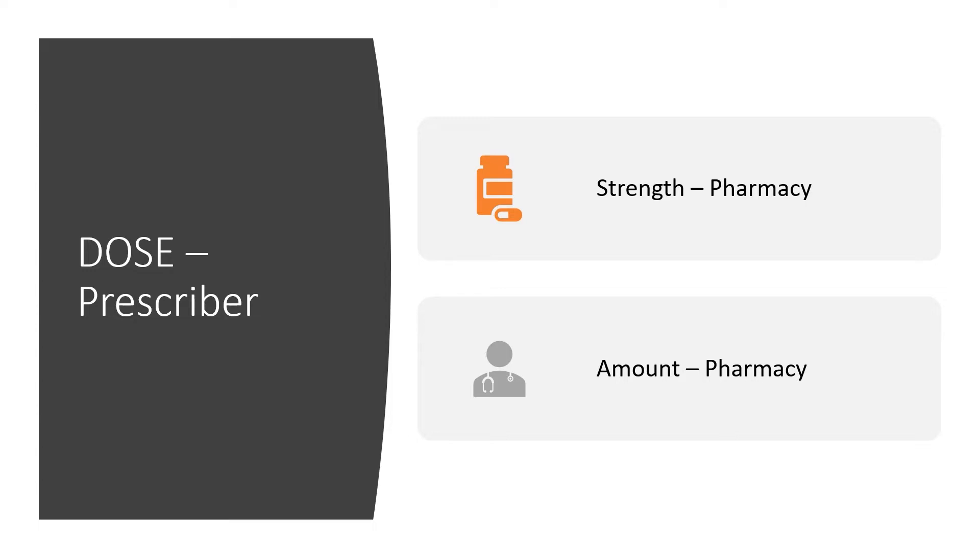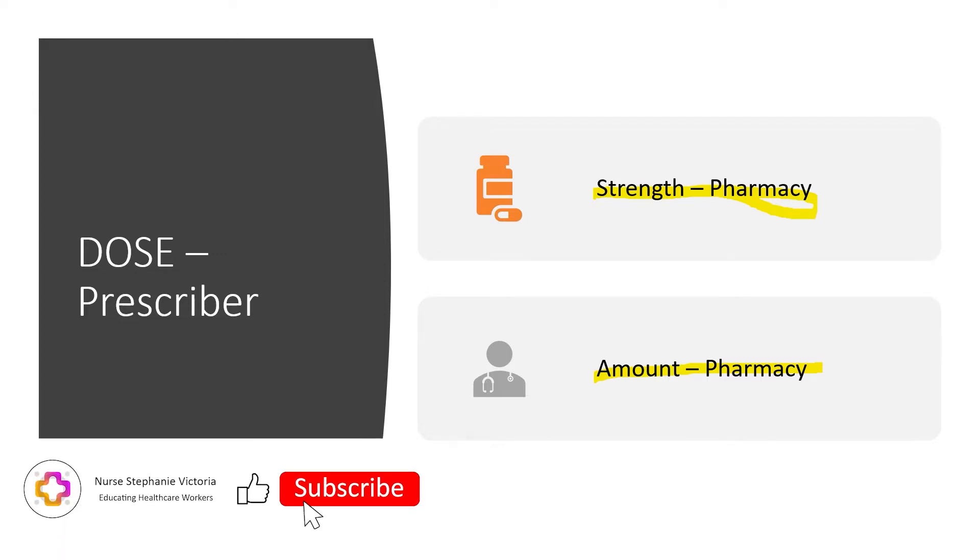The doctor is not the one who writes it because remember your med math and what we went over before. The doctor doesn't care how pharmacy chooses to dispense that dose, meaning if they ordered something that was 100 milligrams, pharmacy can send you two 50 milligram tabs or ten 10 milligram tabs or 25 milligram tabs. So whenever you see strength and amount, there's a method to my madness.